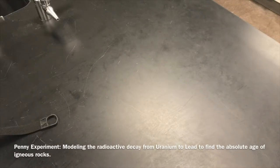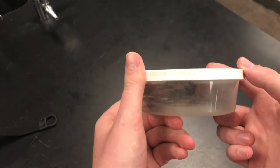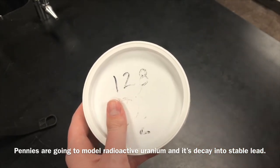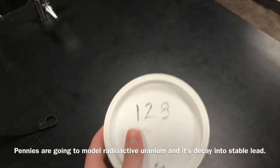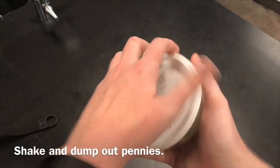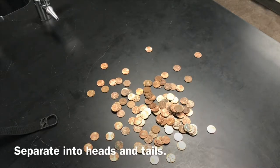In order to model radioactive decay, we're going to pretend that this jar full of 128 pennies is our newly formed igneous rock. The pennies inside are going to represent uranium molecules. I'm going to dump them out and you're going to separate heads and tails.